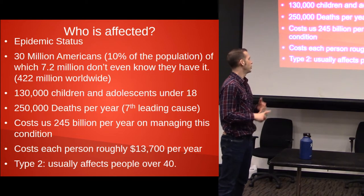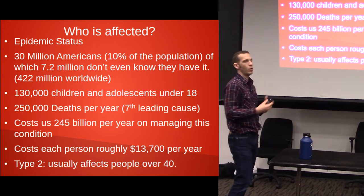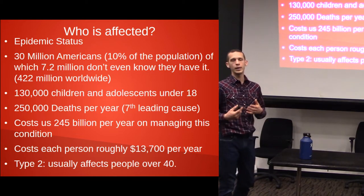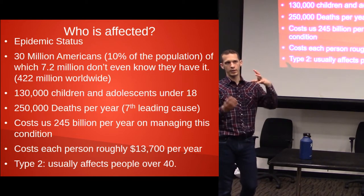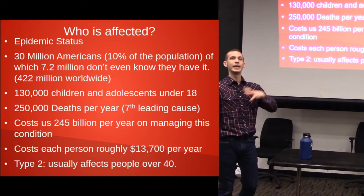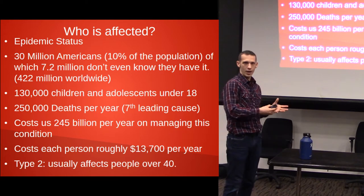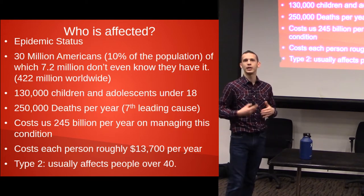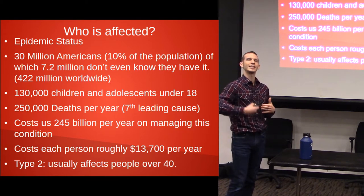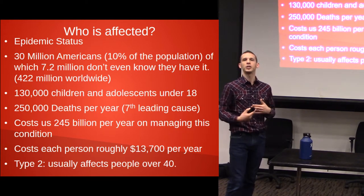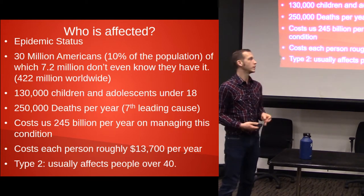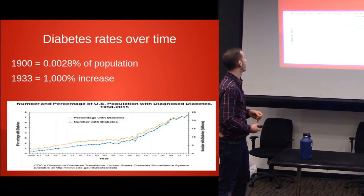Type 2 usually affects people over the age of 40 — that's just the standard. It is associated with aging; it is an accelerated aging process, and we'll go into some of that as well.